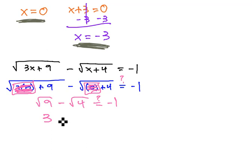Well, the square root of 9 is 3, minus the square root of 4 is 2, and we hope that's equal to negative 1, but what we find out is if we do 3 minus 2, we get 1.